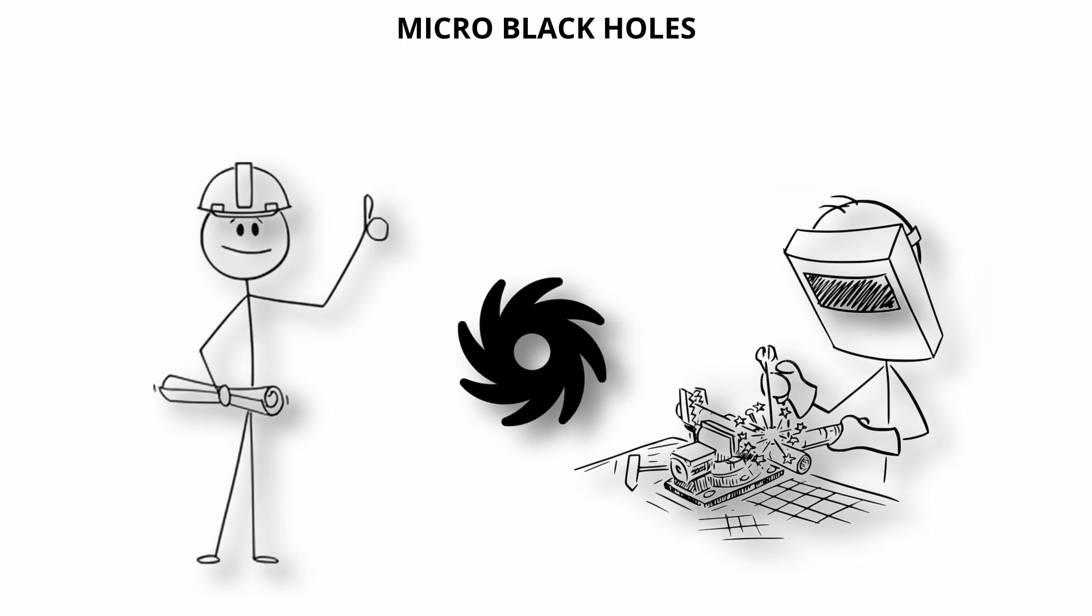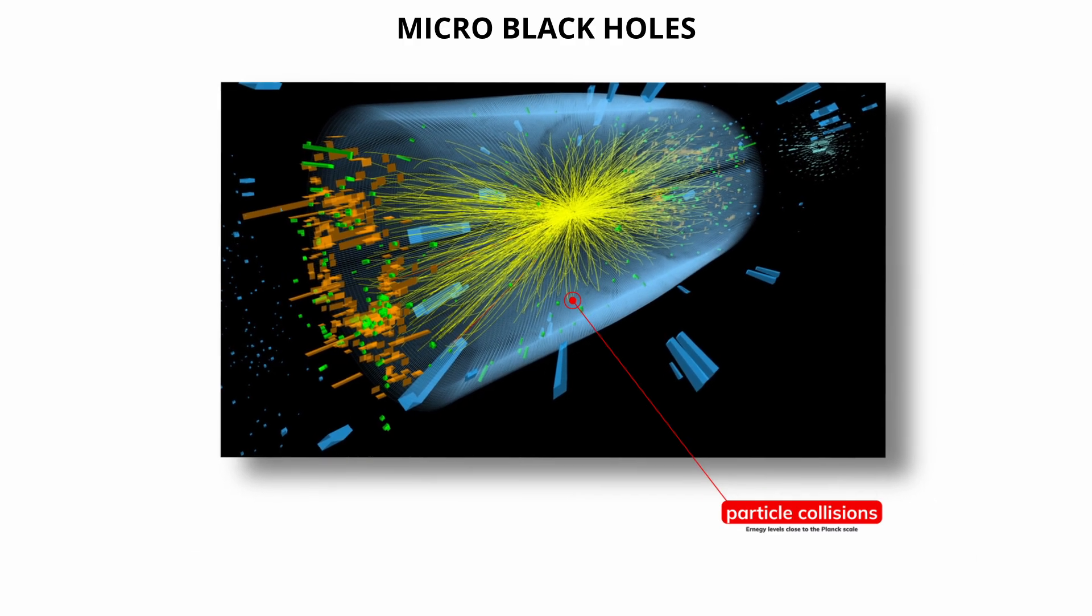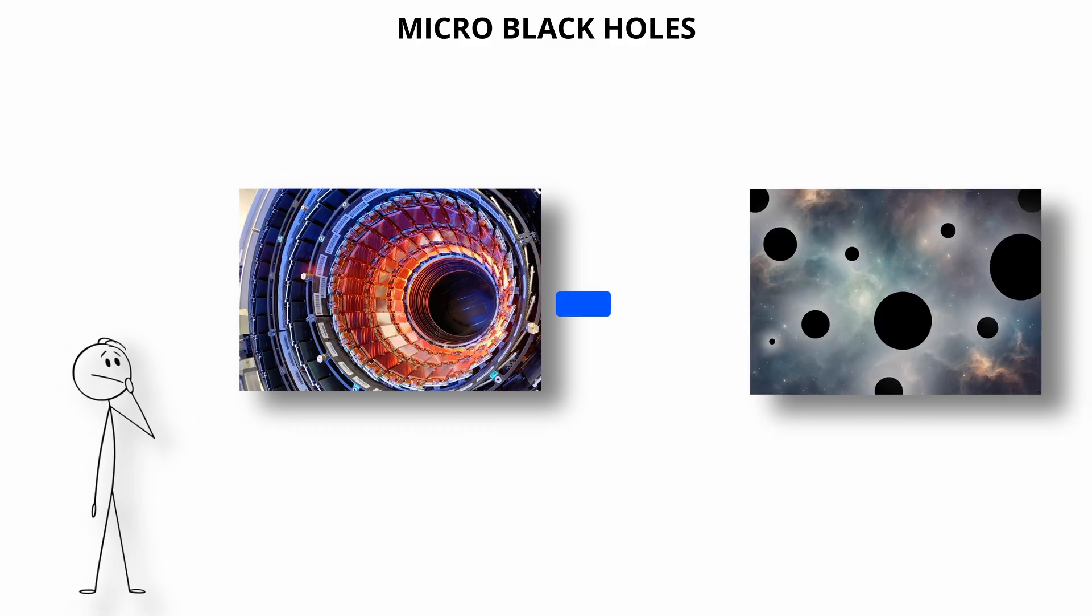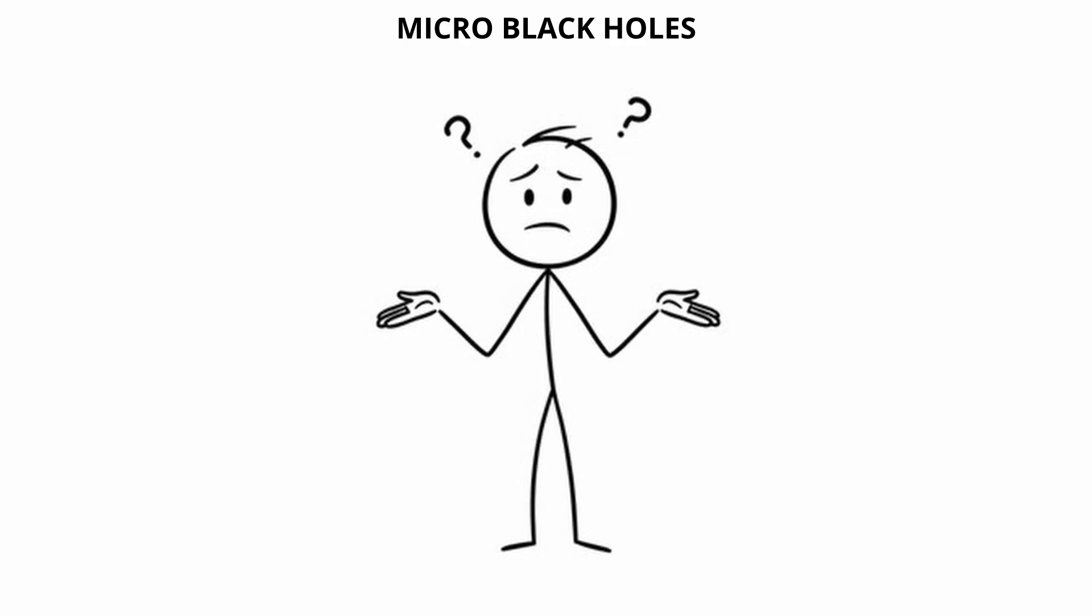One proposed method for creating micro-black holes involves particle collisions at energy levels close to the Planck scale. For instance, some speculative theories suggested that the Large Hadron Collider might produce them if extra dimensions exist. However, no such events have been detected, and current data place strict limits on their likelihood.